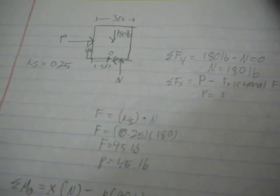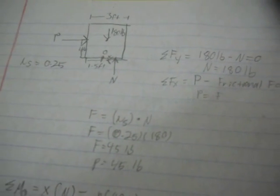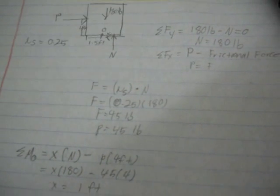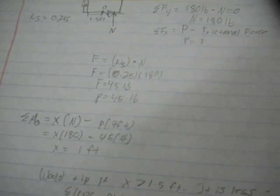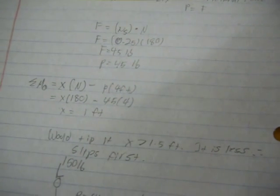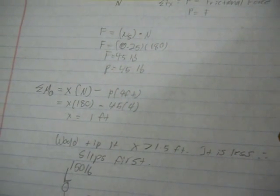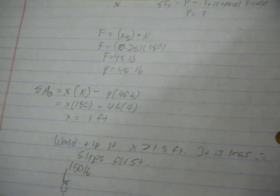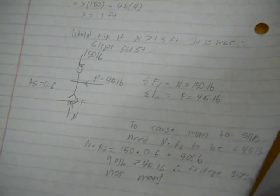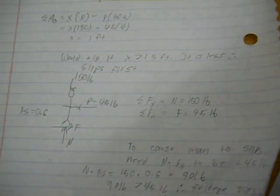Our first assumption that the refrigerator will slip is correct. We've disproven the possibility of the refrigerator tipping, and we've disproven the possibility of the man's shoes slipping.